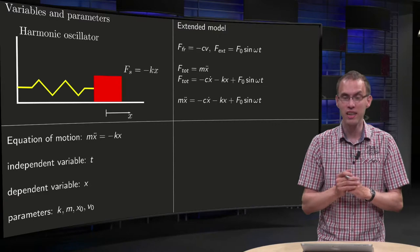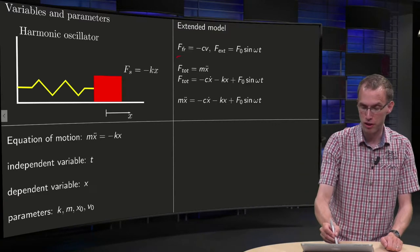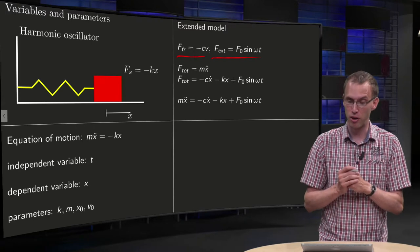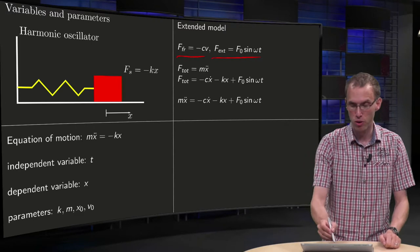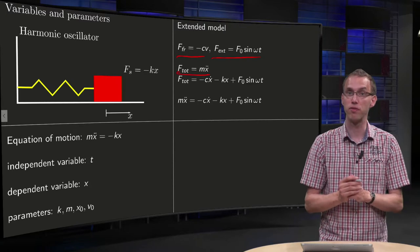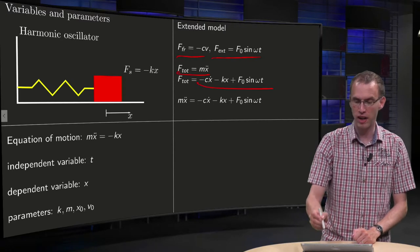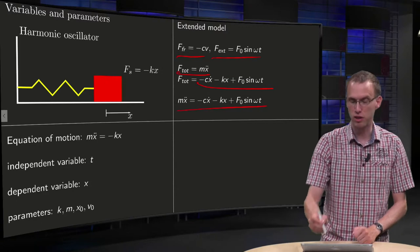I extend this slightly. If you, for example, include the frictional force minus c times v and the exterior force f0 sin omega naught times t, then you know Newton's law: sum of the forces equals m times a. Sum of the forces over here, so you get the differential equation like this.